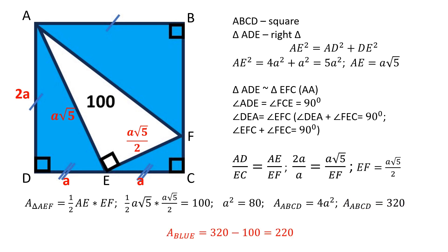The blue shaded area is equal to 320 minus 100, which is 220 square units.